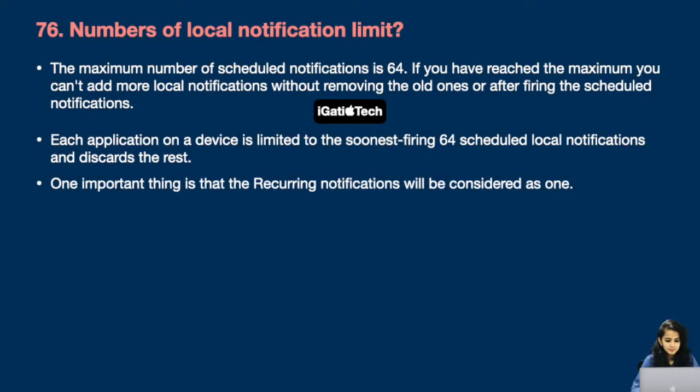Question number 76: Number of local notification limit. The maximum number of scheduled notifications is 64. If you have reached the maximum, you can't add more local notifications without removing the old ones or after firing the scheduled notifications. Each application on a device is limited to the soonest firing 64 scheduled local notifications and discards the rest. One important thing is that recurring notifications will be considered as one.